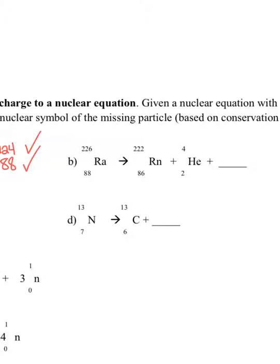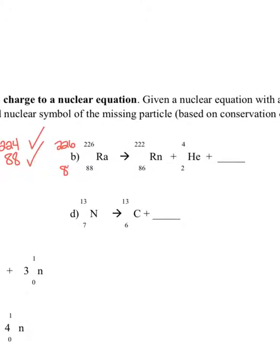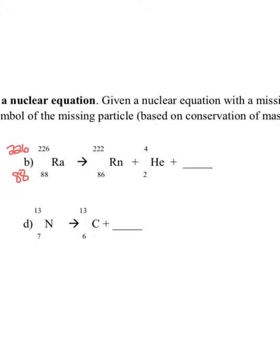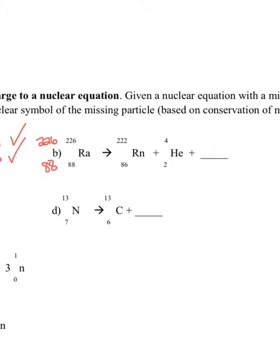On the left-hand side, I have radon 226, and there's only one thing. So my total top number on the left is 226, and my bottom is 88. And on the right, I have 222 plus 4, which gives me 226, and I have 86 plus 2, which gives me 88. Oh, wait a minute. This seems like it's already balanced.